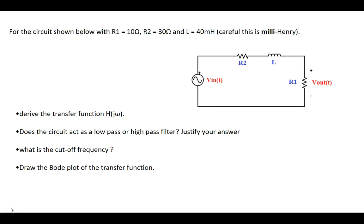Here's a frequency response problem. We have a circuit consisting of two resistors and an inductor. Resistor R1 is 10 ohms, R2 is 30 ohms, and the inductor is 40 millihenry. The goals are to derive the transfer function, figure out if the circuit acts as a low-pass or high-pass filter, find the cutoff frequency, and draw the Bode plot of the transfer function.